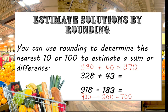So that means 918 minus 183 is about 700. These answers aren't exact, but it lets us quickly and mentally get really close to the right answer.